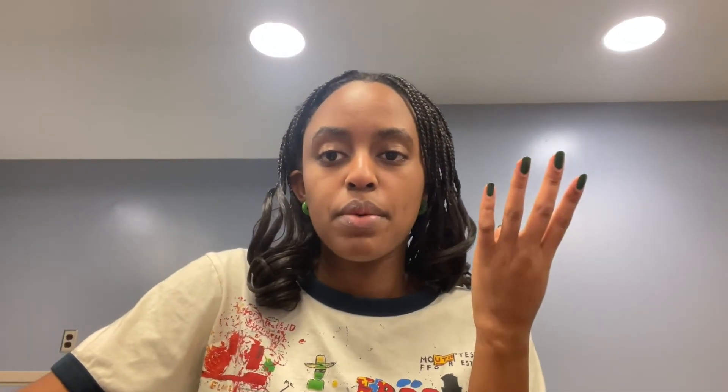Filters can be designed to attenuate these undesirable frequencies and pass or amplify the desirable ones. There are four primary types of filters: high-pass, low-pass, band-pass, and notch filters.